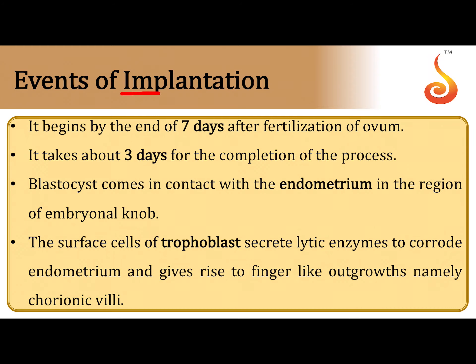What is implantation? An embryo which has from about 32 to 64 blastomeres is referred to as the blastocyst. You are all aware of this hollow embryo in human embryonic development, called the blastocyst. This blastocyst attaches itself to the inner uterine lining, or the endometrium.